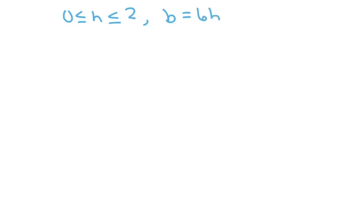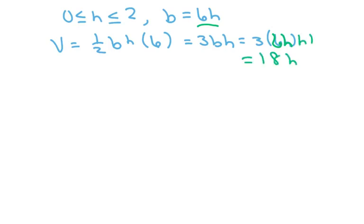we have that the volume equals 1 half, base times height, times 6, which equals 3B times H, which equals 3 times 6H, I'm substituting, times H, and that's going to give you 18H squared.